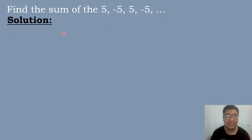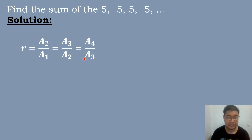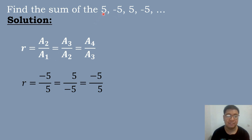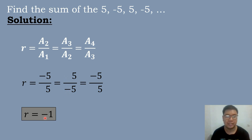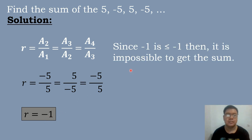We find the common ratio using the formula A sub 2 divided by A sub 1, A sub 3 divided by A sub 2, and A sub 4 divided by A sub 3. Substituting: A sub 2 is negative 5, A sub 1 is 5, A sub 3 is positive 5, A sub 2 is negative 5, A sub 4 is negative 5, and A sub 3 is positive 5. Dividing: negative 5 divided by 5 equals negative 1, 5 divided by negative 5 equals negative 1, and negative 5 divided by 5 equals negative 1. Since R equals negative 1, it is impossible to get the sum of the geometric sequence.